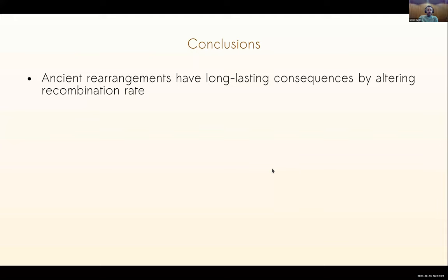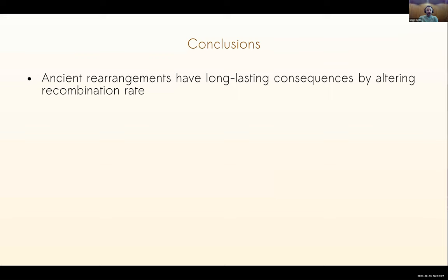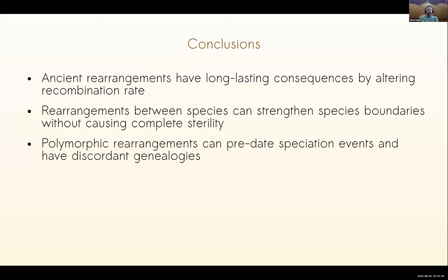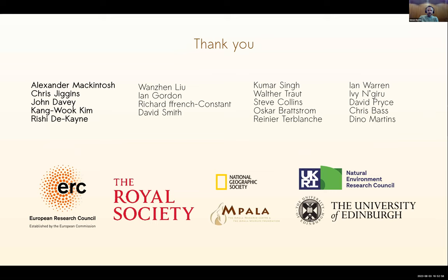In conclusion: in the first part, I showed that ancient rearrangements have long-lasting consequences because they alter recombination rate. Rearrangements that occurred recently that differ between species can strengthen the boundaries between them, even if they don't cause complete sterility. And polymorphic rearrangements that exist as polymorphisms in current populations can actually be very old - so old that they could predate speciation events and have discordant trees compared to the species branching pattern. With that I have many people to thank, especially Alexander McIntosh, Chris Jiggins, John Davey, Kangwuk Kim, and Rishi Dekain, along with lots of funding bodies. Thank you all for listening.